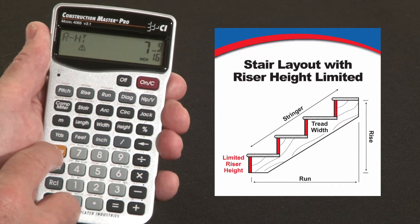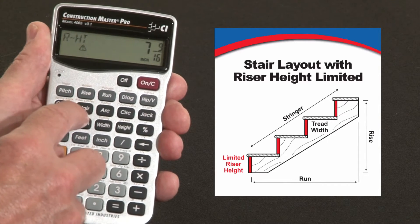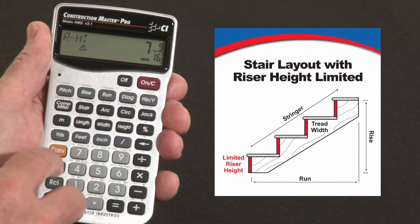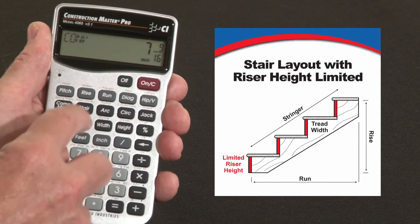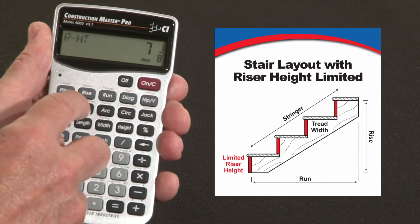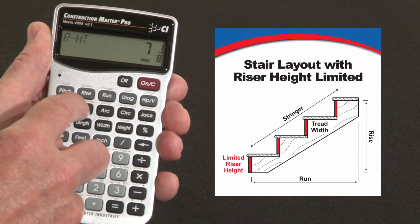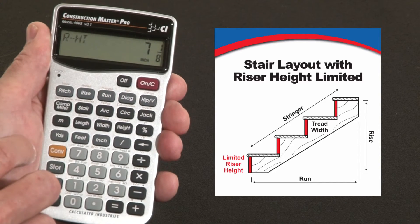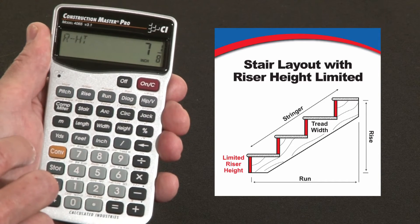So what you do is hit Convert Stair — above the stair key you can see it says "Riser Limited." Hit Convert Stair, and now it recalculates. The riser heights are going to be seven and an eighth inches only.